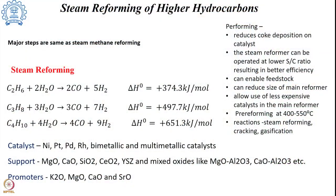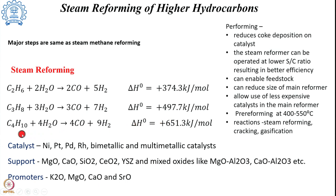When it comes to higher hydrocarbons, LPG is available and could be a preferred feedstock source for producing hydrogen. Its components can be methane, propane, or butane, and their steam reforming can give syngas. The important point to note here is that the delta H value increases as the carbon content increases, meaning the process gets more and more endothermic as the carbon content in the feedstock increases.